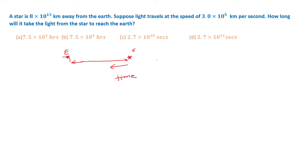Now, as we know that time equals distance divided by speed. What is distance? Distance is 8 × 10^13 km. What is speed? Speed is 3 × 10^5 km per second.